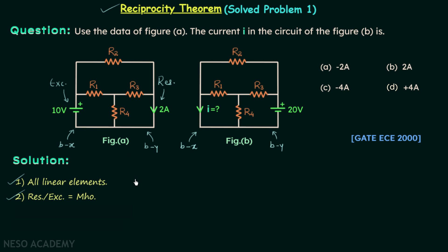Now condition number 3. According to this condition the network should have only one source. It should be a single source network and this source should be independent. We have one source and this is independent and there is no other source present. So condition 3 is also satisfied.